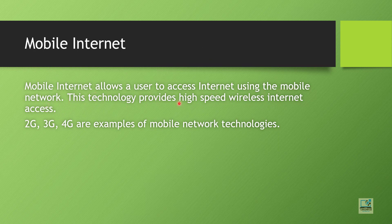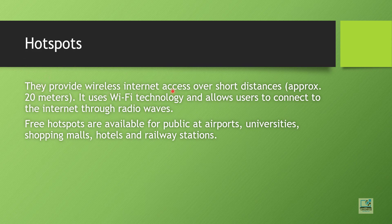Next is mobile internet. Mobile internet allows a user to access the internet using the mobile network. This technology provides high-speed wireless internet access. 2G, 3G, and 4G are examples of mobile network technologies, using radio waves for wireless communication. The modern standard is 4G — fourth generation of mobile network, also known as LTE, which stands for Long Term Evolution. Next is hotspot, which provides wireless internet access over short distances of approximately 20 meters using Wi-Fi technology — Wi-Fi stands for Wireless Fidelity — allowing users to connect via radio waves. Free hotspots are available at airports, universities, shopping malls, hotels, and railway stations.